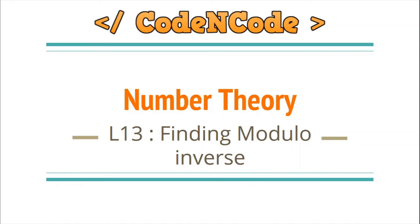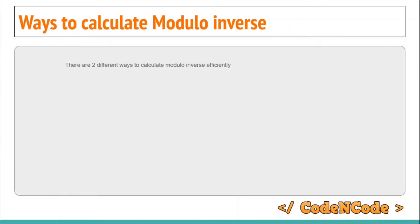Hello guys, this is Code and Code, and this is the 13th lecture of this number theory series. In this lecture we are going to see how we can calculate the modular inverse of a number. Before you continue, go and watch the previous lecture, lecture 12, because in that lecture I have explained most of the things about modular inverse — what it is and why we need it. In this lecture we are directly going to see how to calculate it. There are two efficient ways to calculate modular inverse that we are going to study.